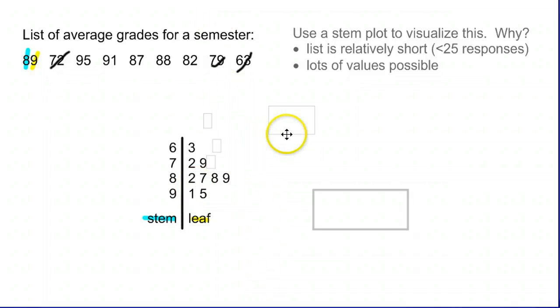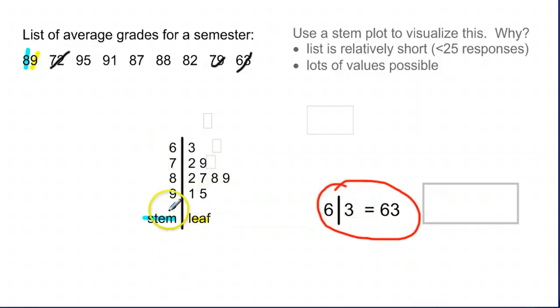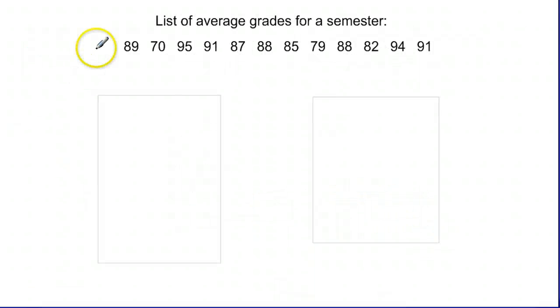I always leave a key. You'll notice down here I created a key. I always leave a key with your stem and leaf plots - it helps you interpret what the number actually means. Six bar three intuitively would make sense as 63, but sometimes it might correspond to six hundred and thirty or six point three or something else like that depending on how you set up your graph. So just always create a key.